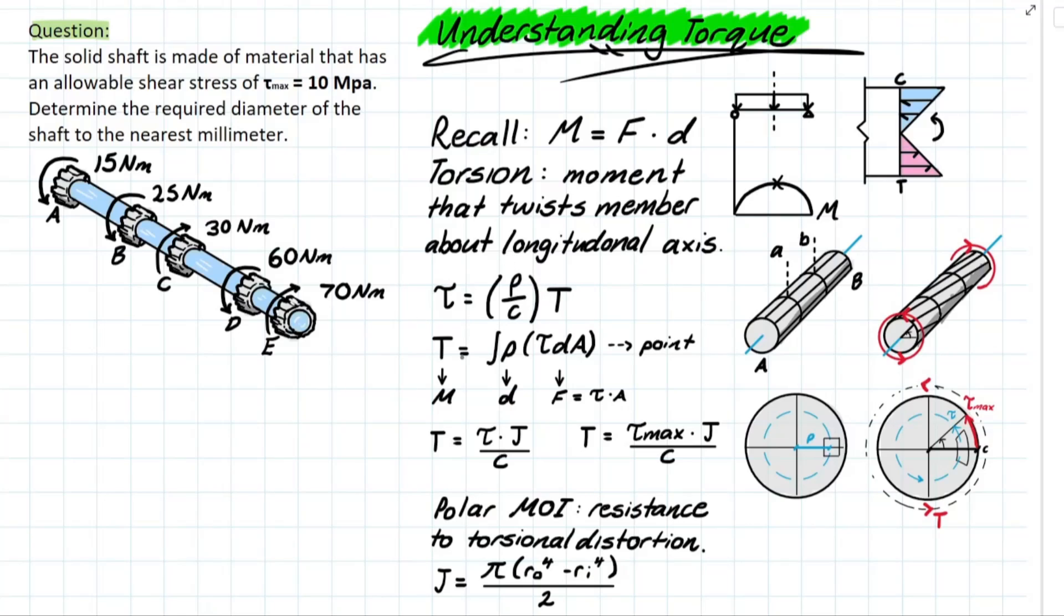The second is a little bit trickier. We need to understand that the torque produced by the stress distribution over the entire cross section has to be equivalent to the internal torque that is being developed or applied at the section in order to remain in equilibrium.